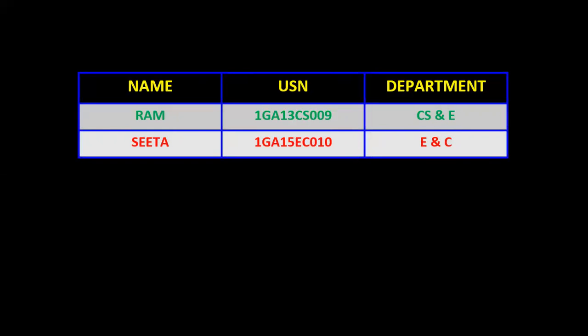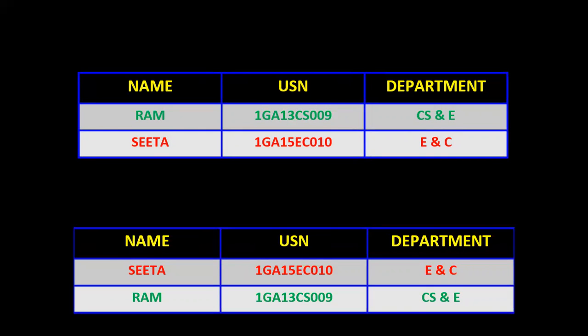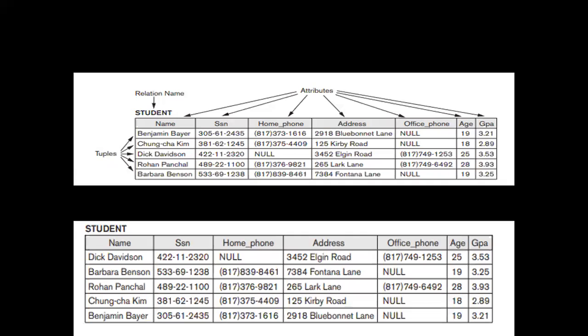Another example: we have Ram with USN 1GA13CS009 from the CSE department, and Sita from the EC department with USN 1G15EC01. If we change the order, the first row becomes second and second becomes first. Again it has not affected the details — Sita still belongs to EC department and Ram belongs to CS department. This again confirms that changing the ordering of tuples still gives the same meaning.